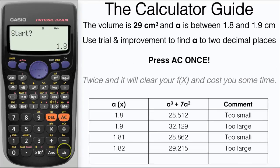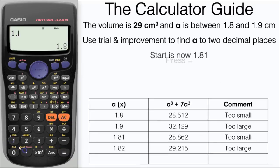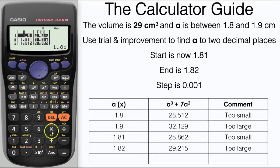Press AC but just once otherwise it will clear your FX and input your new start value this time 1.81 and the new end value this time 1.82 and the step is going to be 0.001. And here we have the values between 1.81 and 1.82.